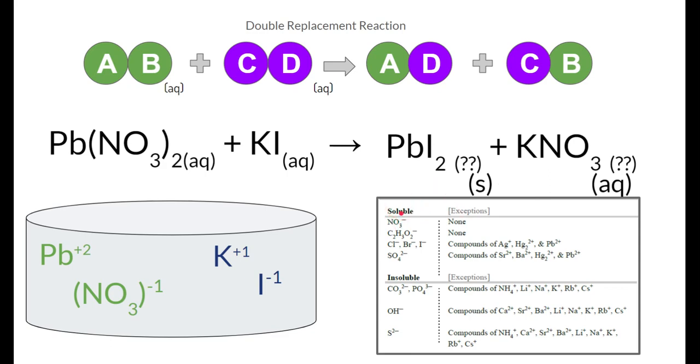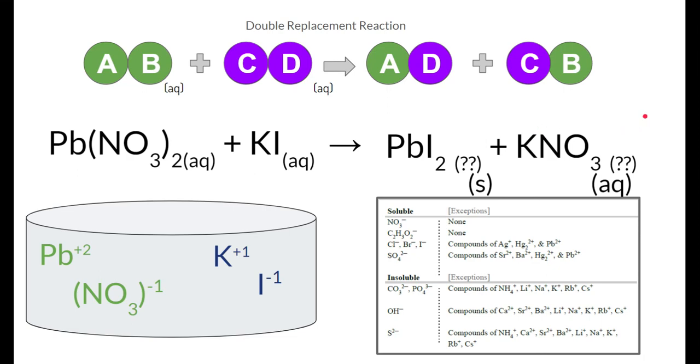S stands for insoluble because it forms a solid substance. Soluble means that it is still dissolved in water when the reaction's done. Insoluble means after the reaction's finished, it formed a substance that became not able to be dissolved in water. So these two substances, if you mix them, go through a reaction, and they're going to show an insoluble substance. Now, KNO3, notice NO3 is soluble, and there's no exceptions. This thing is still going to be dissolved in water.